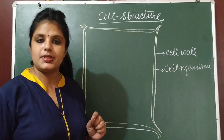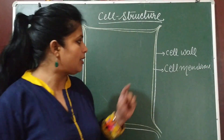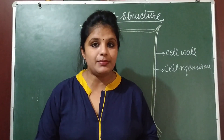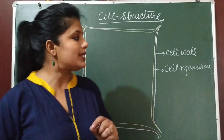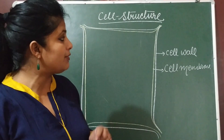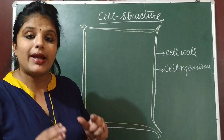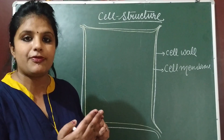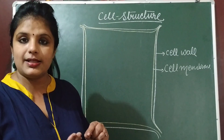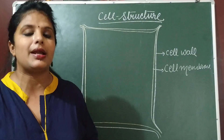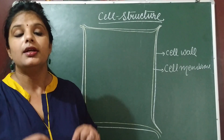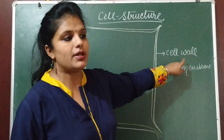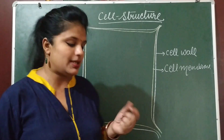Cell wall is absent in animal cell. The first question is: why is cell wall absent in animal cell? Cell wall is absent in animal cell because it provides rigidity to plant cells. Plant cells do not have a specific skeletal system, so to support the plant cell, to provide rigidity and to provide shape, an additional cell wall is present.